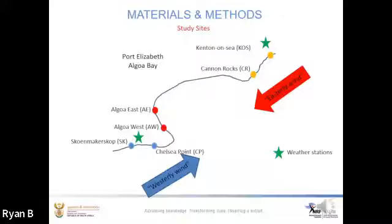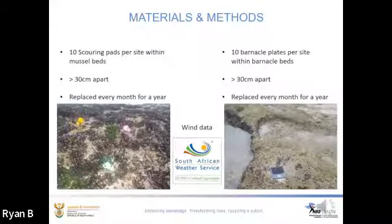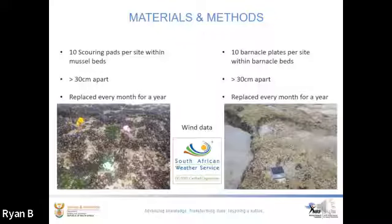On the west you would find Schoenmakerskop and Chelsea Point; within the bay, Algoa West and Algoa East; and on the east, Cannon Rocks and Cannon-on-Sea. These sites lie parallel to the dominant wind regimes found in this region. Scouring pads were used as artificial settlement material for mussel larvae, and PVC plates with sandpaper were used for barnacle larvae. These were placed between mussel and barnacle beds. The artificial collectors were replaced monthly.